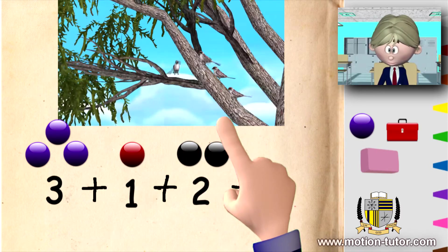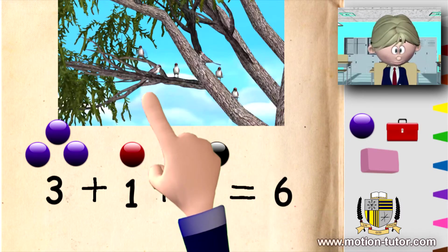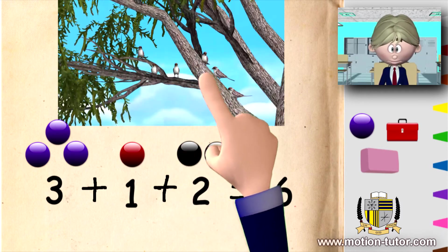And then two more came. One and two. So how many birds do we see? One, two, three, four, five, six.